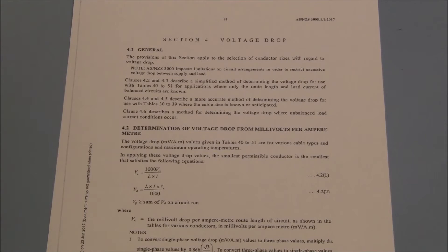The voltage drop equations are listed in Section 4 of AS3008. As we are seeking the value of VC, we will use VC equals VD multiplied by 1000 all divided by length multiplied by current.